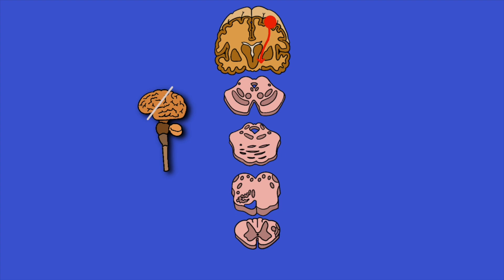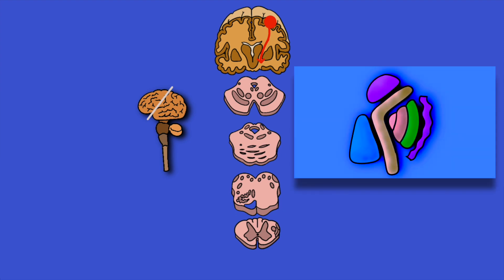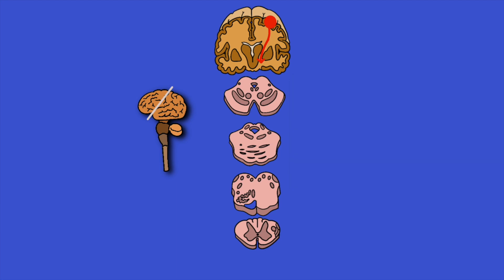Here we have a transverse representation of the internal capsule. The thalamus is placed medially; structures belonging to the basal ganglia include the putamen, the head of the caudate nucleus, and components of the globus pallidus. Laterally sits a structure called the claustrum. Squeezed in between is a thoroughfare of white matter — the internal capsule. The lateral corticospinal tract specifically runs through the posterior limb of the internal capsule.